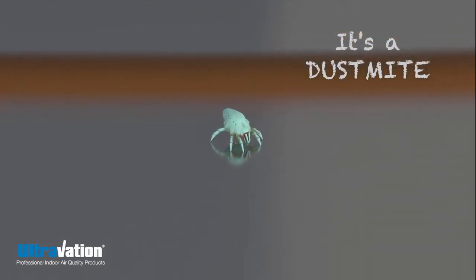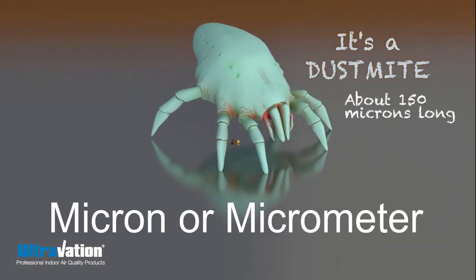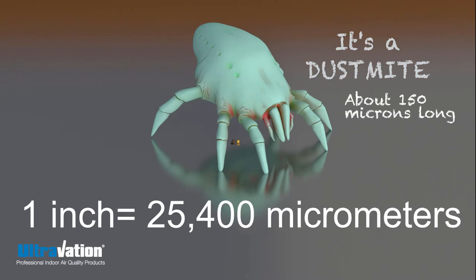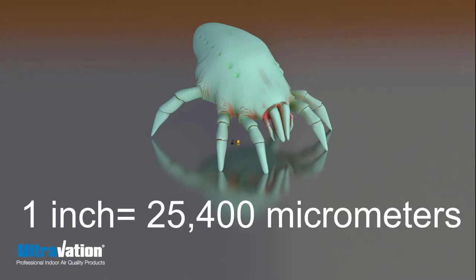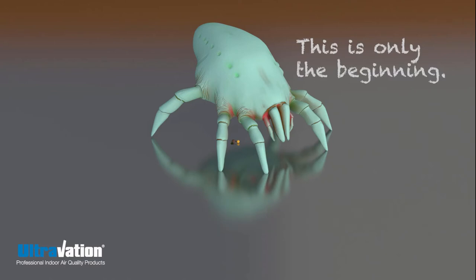Scientists use a very small unit of measure called a micron or micrometer to measure things as small. There are 25,400 microns in an inch. People can see things as small as 10 microns if the light is good.